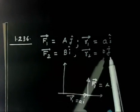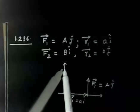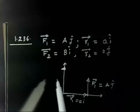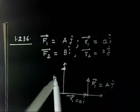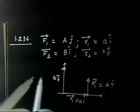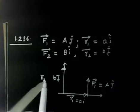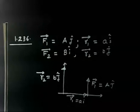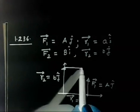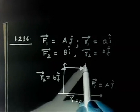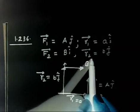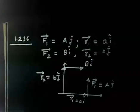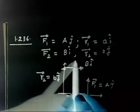Now the next force: R2 is BZ, so BZ is somewhere here — let us say this value is B units. The force F2 is BI, acting in the x-direction. So R2 is BZ and F2 is BI.